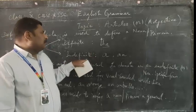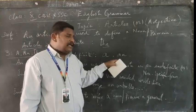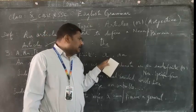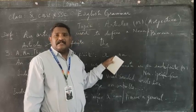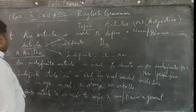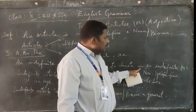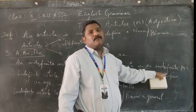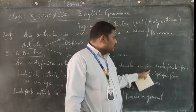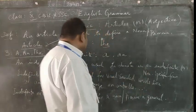Under indefinite articles, we have two: A and AN. A, the indefinite article, is used to denote a noun in an indefinite or non-specific form — to refer to any noun in an indefinite form. That is why it is called an indefinite article. AN, the other indefinite article, is mostly used to refer to vowel-sounded words.